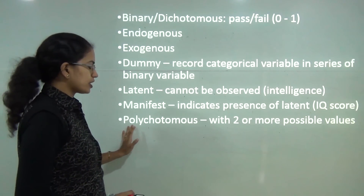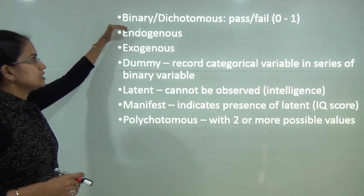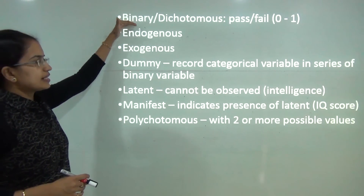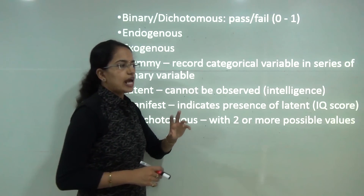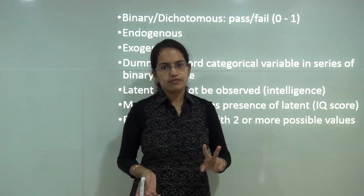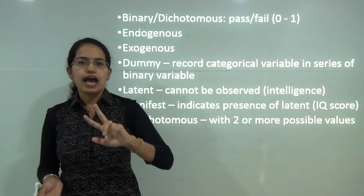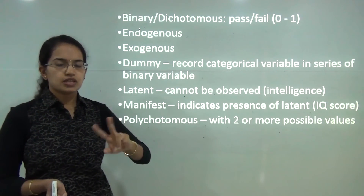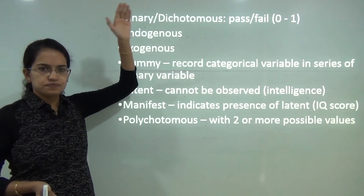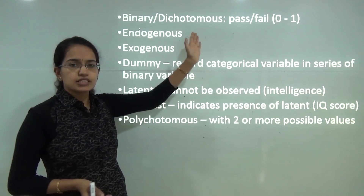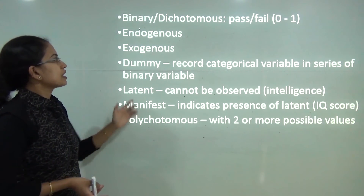Some other important variables: the first is the binary or dichotomous variable — pass or fail, 0 or 1. Anything expressed in absolute terms as 0 or 1 would be binary. So it can be yes or no, pass or fail, and so on.